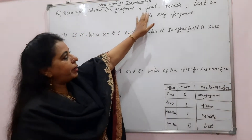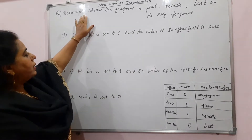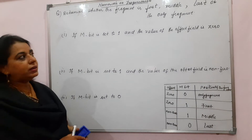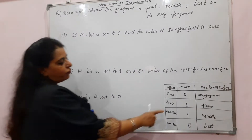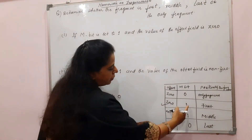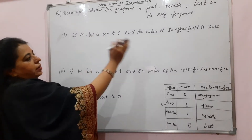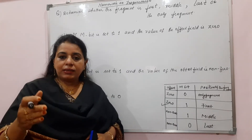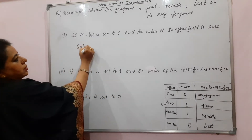Determine whether the fragment is the first, middle, last, or only fragment. Question 1: if M bit is set to 1 and the value of the offset field is 0. That means this question is related to the second row of our table. More bit is 1 and the offset field is 0. When the offset field is 0, it indicates no bytes were sent previous to that fragment. So the answer is: this is the first fragment.